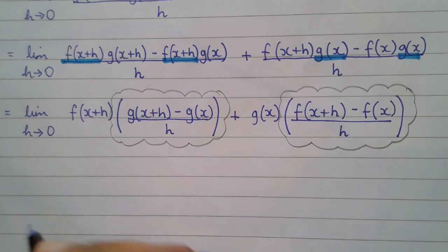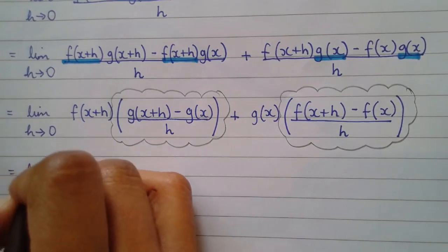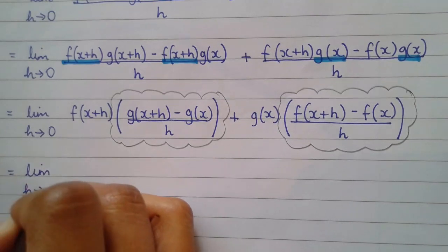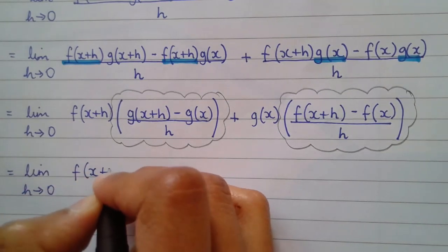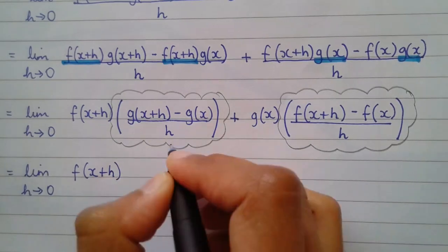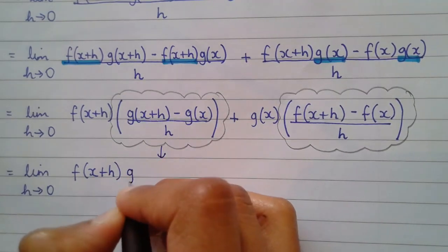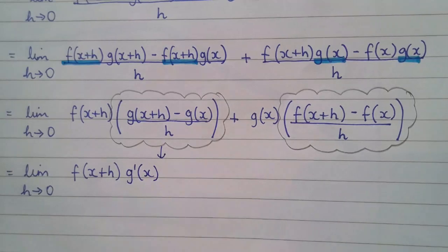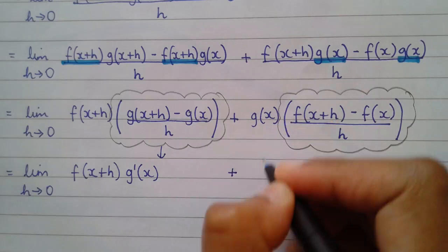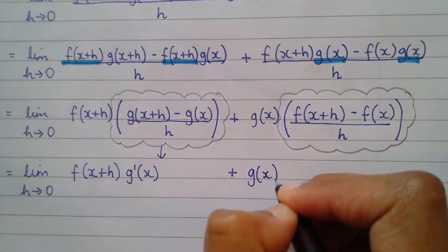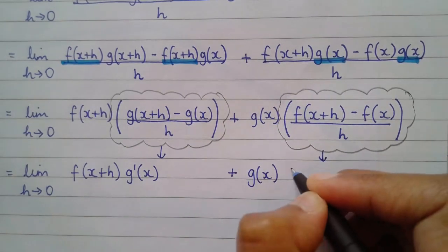As h tends towards zero, we've got an expression for the gradient f of x plus h. This becomes the derivative of g of x. So, we write it in that notation. Plus, this stays as it is, g of x. And this thing has become the derivative of f of x.